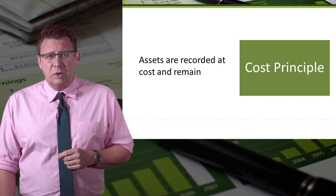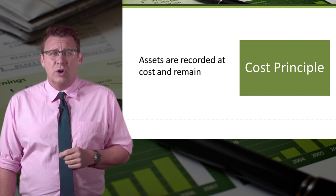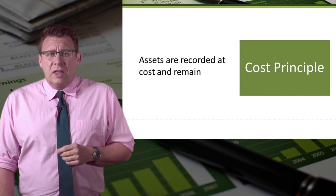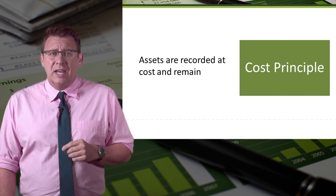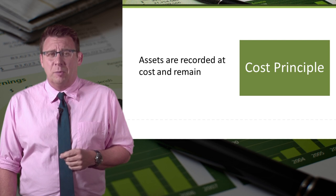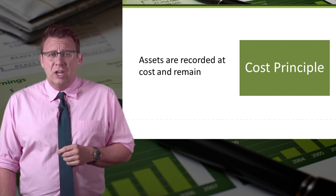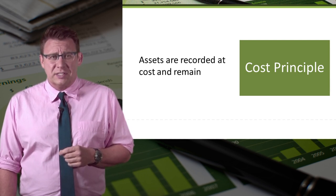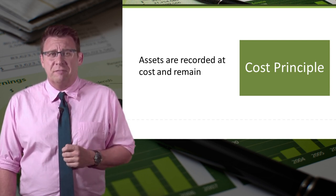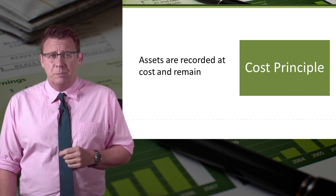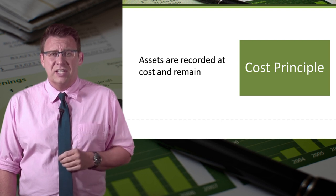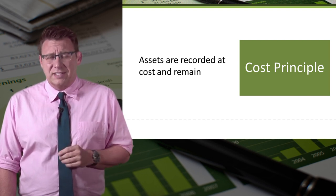The cost principle requires assets to be recorded at their purchase price, which we call cost. They will remain at that value because cost is verifiable and reliable. Generally, assets are not increased in value when their fair market value increases because fair market value is less verifiable and reliable. Of course, there are some exceptions to the cost principle, but those exceptions tend to be more advanced topics.